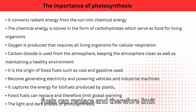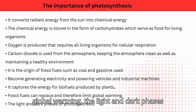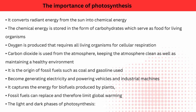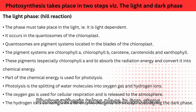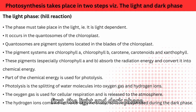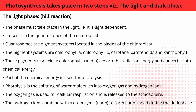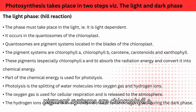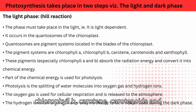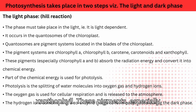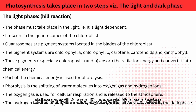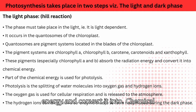Fossil fuels can be replaced, therefore limiting global warming. The light and dark phases of photosynthesis: photosynthesis takes place in two steps — the light phase and the dark phase. The light phase must take place in the light, i.e. it is light dependent. It occurs in the quantosomes of the chloroplast. Quantosomes are pigment systems located in the blades of the chloroplast. The pigment systems are chlorophyll A, chlorophyll B, carotene, carotenoids, and xanthophyll. These pigments, especially chlorophyll A and B, absorb radiation energy and convert it into chemical energy.